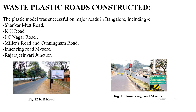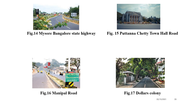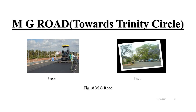The first plastic road was constructed in Kovilapatri village in Tuticorin district in October 2002 as part of research by Dr. Vasudevan. Tamil Nadu has constructed the longest plastic road network in India, while Himachal Pradesh adopted plastic roads in 2008 and is promoting the culture of using plastic for road construction. Jamshedpur, the industrial capital associated with the Tata Group, is also constructing plastic roads on a large scale. Notable roads constructed include Shankar Mutt Road, Millers Road, Inner Ring Road, Mysore Junction, Mysore-Bangalore State Highway, Putana Chetty Town Hall Road, Dollars Colony Bangalore, Manipal Road, and the latter half of MG Road, all using plastic mixed in bitumen.